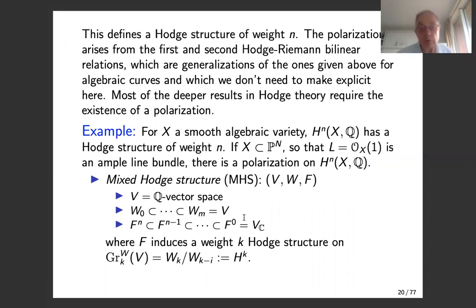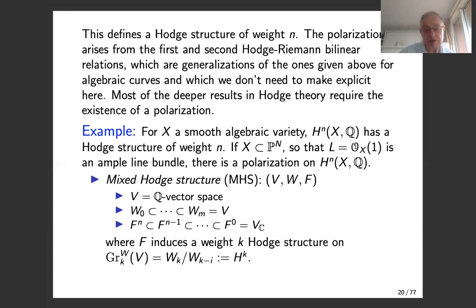This is a Hodge structure of weight n. The polarization arises from a bilinear form with two bilinear relations. The classical theorem — Hodge's theorem in the 1930s — is that the cohomology of a smooth algebraic variety has a polarized Hodge structure of weight n. He always thought of the algebraic variety as embedded in projective space, so it has an ample line bundle from which you get a polarization. A better way of saying it is that the cohomology has a Hodge structure, and given an ample line bundle, that Hodge structure gets a polarization.